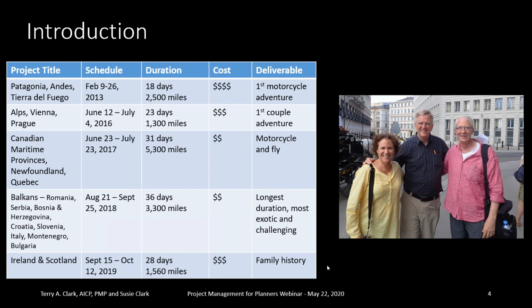On the left is a high-level project description of our travels — title, schedule, start and finish date, duration in days and miles traveled, cost estimate, and deliverable. For us, the deliverable was a completed safe trip where we enjoyed ourselves, met new people in new areas, got home safe relatively close to our schedule, and with a little bit of money left in the bank. Each trip has a slightly different focus — it's a quick high-level overview in project management format.